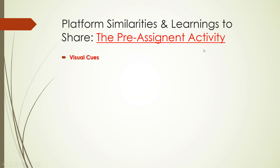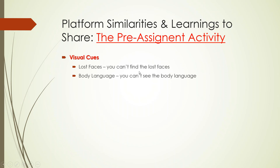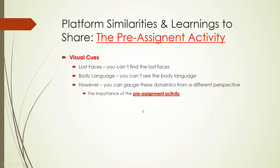Starting with platform similarities — the pre-assignment activity. One key thing I've learned is that online, you lose visual cues. You can't see faces or body language, whereas in an on-ground course everything is in front of you. So you have to gauge dynamics from a different perspective. For me, that's been the pre-assignment activity — I've learned to look through them carefully to gauge student comfort.